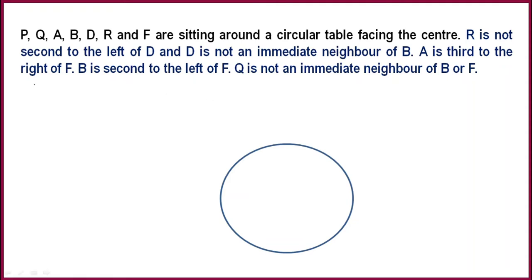First clue is: R is not second to the left of D. Remember, R is not second to the left of D. Second clue: D is not an immediate neighbor of B.